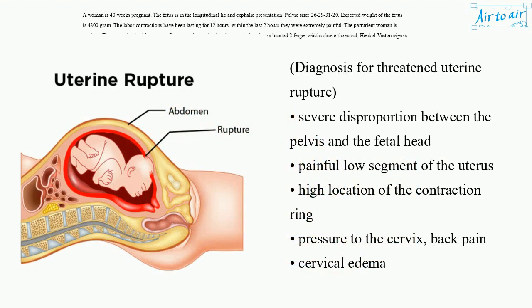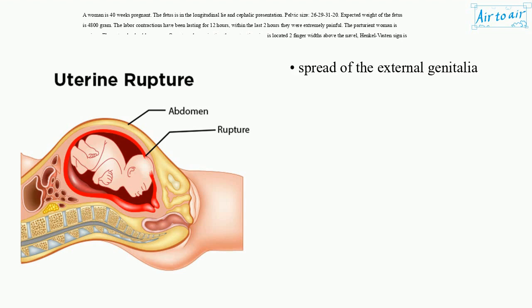Diagnosis for threatened uterine rupture: severe disproportion between the pelvis and the fetal head; painful low segment of the uterus; high location of the contraction ring; pressure to the cervix; back pain; cervical edema; and spreading of the external genitalia.